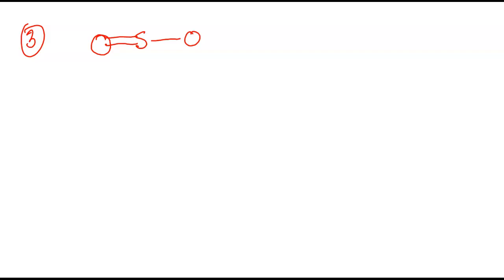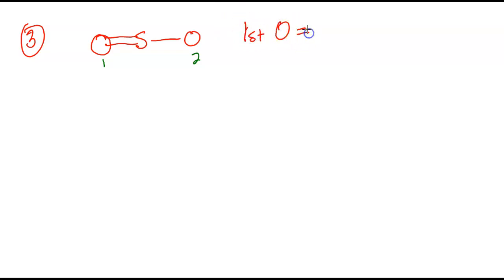Okay, we're back. Feel free at any point in time to pause this video, try out these problems, and come back to check for the answers. We have two oxygens. There is one oxygen and there is a second oxygen here. So I'm going to label the oxygens. I'm going to do the first oxygen. Before I do that, I need to make sure that all these atoms satisfy the octet rule.